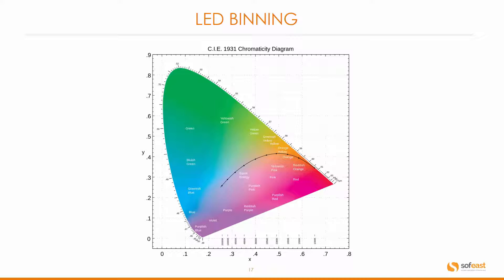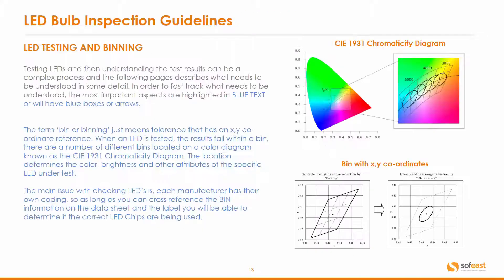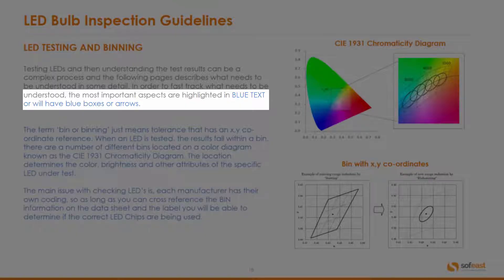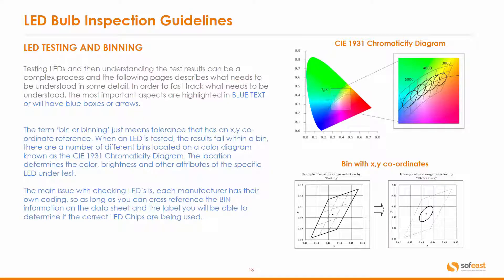Here's a quick introduction to a graph which we will cover in some detail shortly. Testing LEDs and understanding the test results can be a fairly complex process, and the following pages describe what needs to be understood in some detail. In order to fast-track the most important aspects, these are highlighted in blue text or will have blue arrows or boxes around them. The term bin or binning just means a tolerance that has an XY coordinate reference.